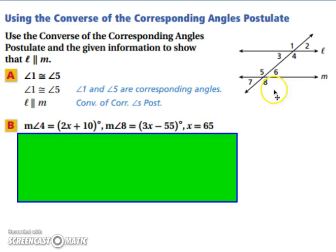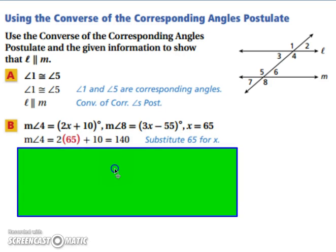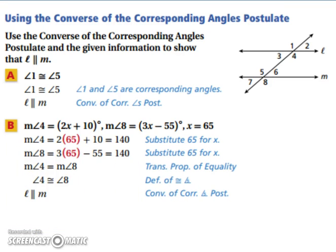For example B, we have angle 4 and angle 8. They are also corresponding angles, so for line L and M to be parallel, they need to be congruent. We're going to substitute 65 in for x in both expressions. The measure of angle 4 is 2 times 65 plus 10, which gives us 140. And for angle 8, 3 times 65 minus 55 gives us 140 as well. Therefore, line L and line M must be parallel.